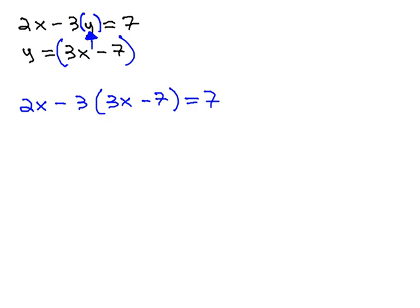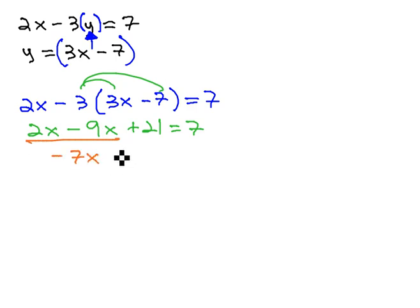We are now able to follow our normal steps for solving equations to solve this equation for x. Distribute the 3, 2x minus 9x plus 21 equals 7. Combine like terms, negative 7x plus 21 equals 7.